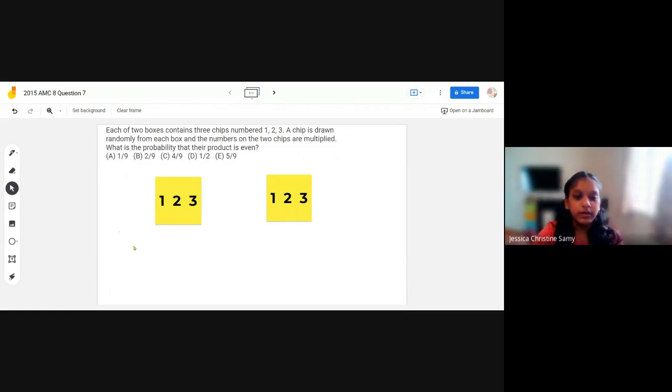So we have two boxes and each of these boxes have three chips numbered 1, 2 and 3. To solve this problem, the first step is to list out the number combinations.